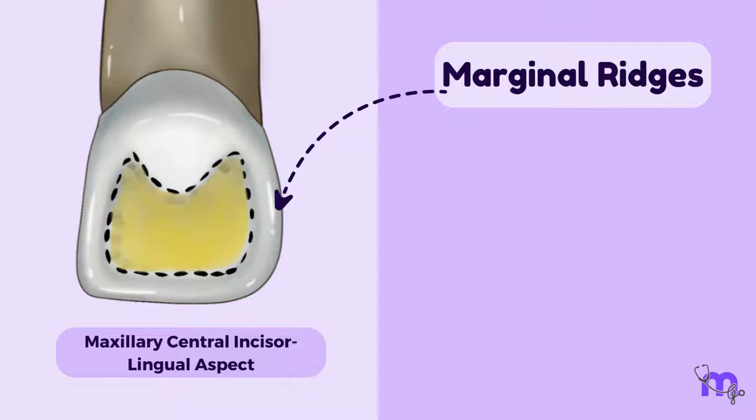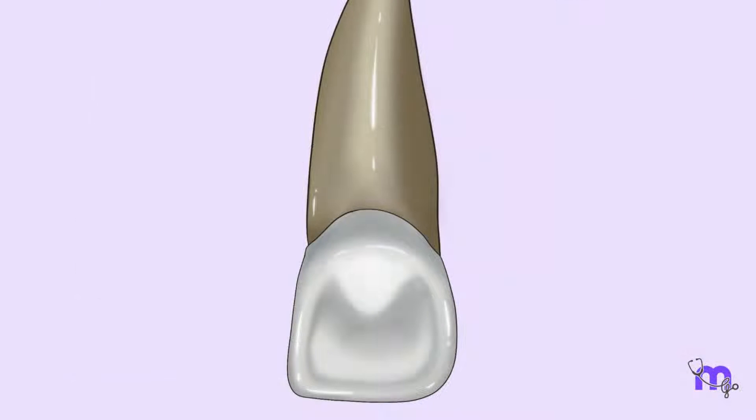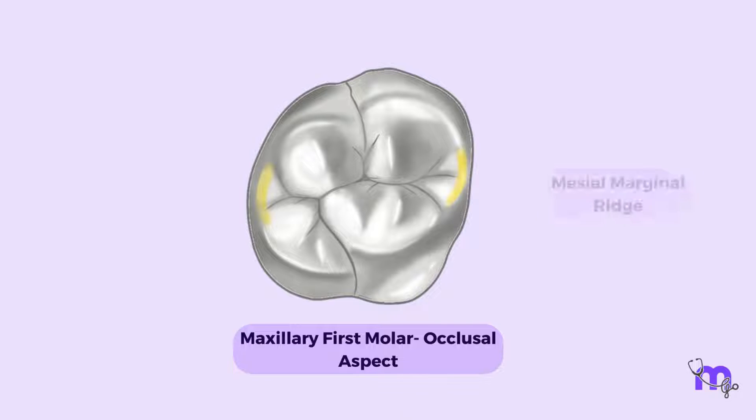What are marginal ridges? These are the rounded borders of enamel that define the edges of a tooth surface and usually border a shallow depression called fossa, known as the mesial and distal marginal ridges. They are also present in the occlusal surfaces of posterior teeth. Let's take an example of a maxillary first molar. Now, if you trace the mesial and distal margins, you will be able to appreciate the mesial and distal marginal ridges.